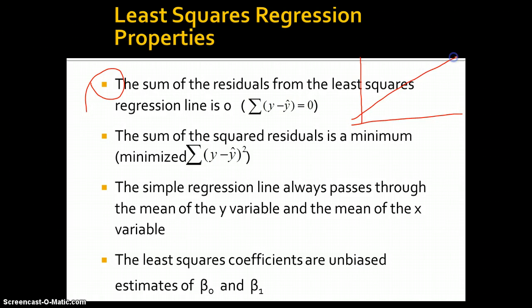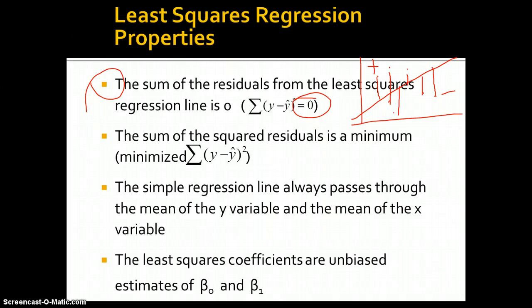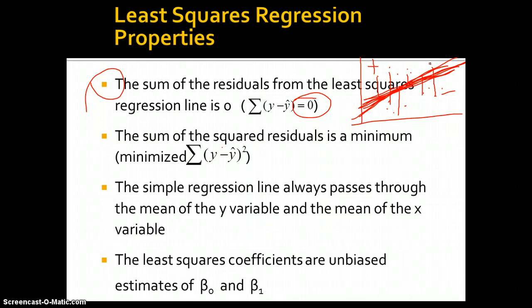If we plot all the different points and add up all of the differences from the regression line, the values that are negative on one side and positive on the other will balance each other out so their result is 0. The sum of the squared residuals is a minimum — this regression line is plotted so that the difference between each point and the regression line is the smallest possible.